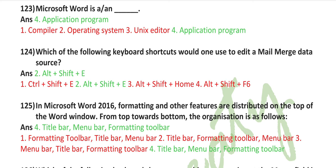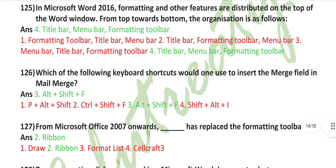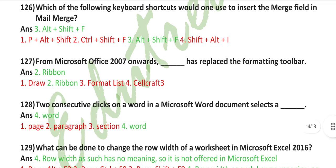Which of the following keyboard shortcuts would one use to edit a mail merge data source? Alt plus Shift plus E. In Microsoft Word 2016, formatting and other features are distributed on the top of the Word window. From top toward bottom, the organization is as follows: title bar, menu bar, and formatting toolbar. Which of the following keyboard shortcut would one use to insert the merge field in mail merge? Alt plus Shift plus F.